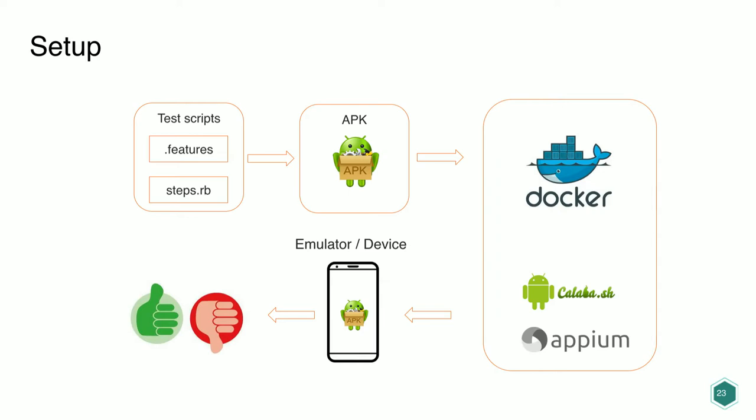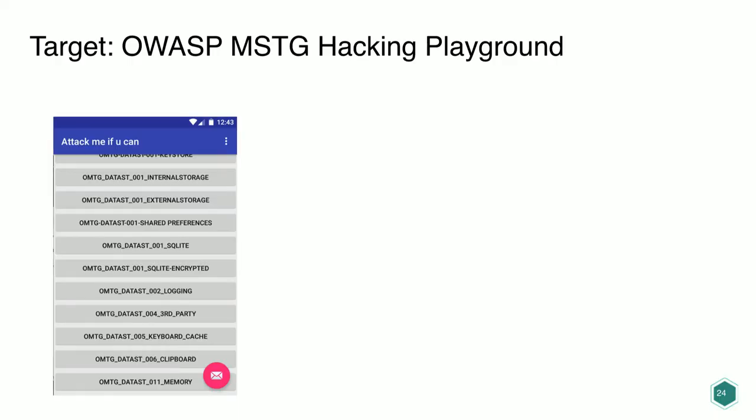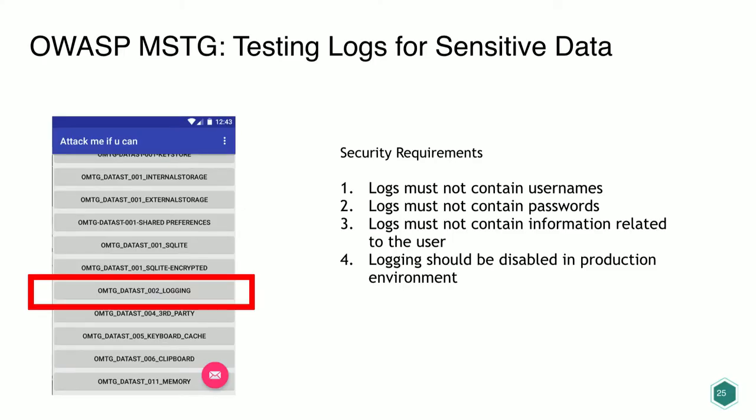Technically, the setup looks like this: we have our test scripts and APK in a Docker container with our UI automation framework. Tests can be executed on emulators or real devices — if you have a device farm, you execute your tests on every device in one shot. As a target we're using the OWASP MSTG Hacking Playground app, which has a menu of different vulnerabilities to practice mobile security testing.